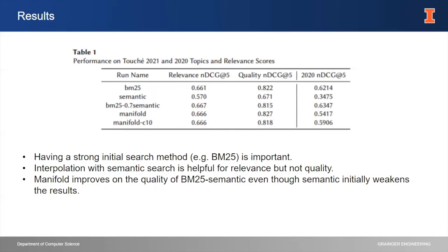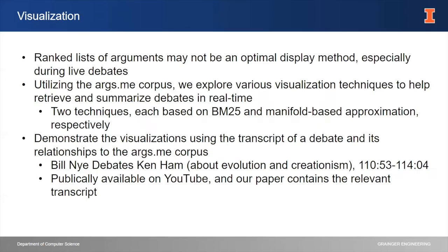Here are the results. For relevance, the semantic method helped the most and manifold did not decrease that. For quality, the manifold approach provided a somewhat of an increase — specifically it provided an increase over 0.815 rather than 0.822, so it recovered from the performance degradation introduced by interpolating with the semantic method for quality. Those were our argument retrieval results.